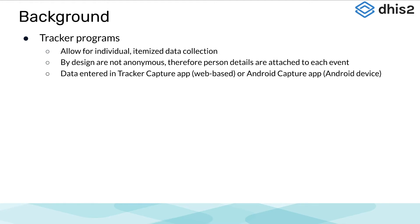To cover a bit about the background for this session, let's remind ourselves about the key features of Tracker programs. They allow for individual, itemized data collection. And by design, they are not anonymous in nature — there will always be an entity that is being tracked, for example, a person or a commodity.